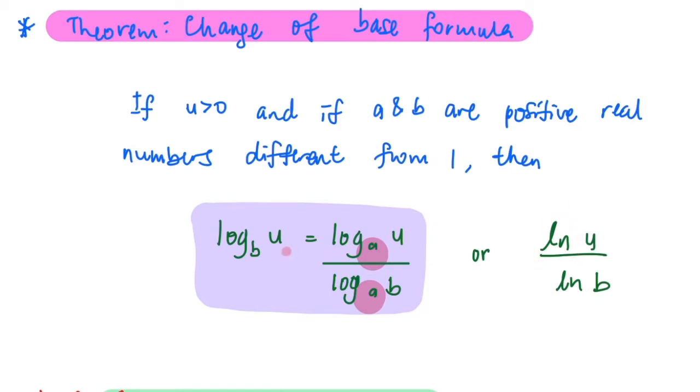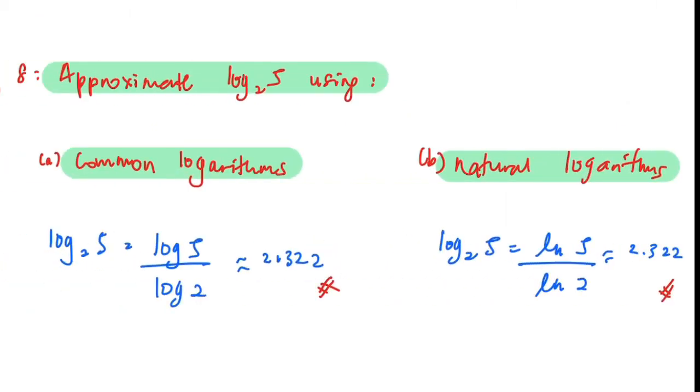Now let's see example 8, the final example in this subtopic. Approximate log base 2 of 5 using common log. So just write log base 2 of 5. Using common log, this is just log 5 divided by log 2, and then you can just use a calculator to give the approximate answer.